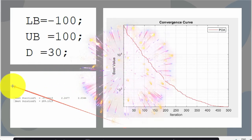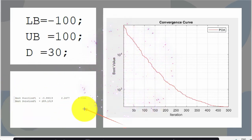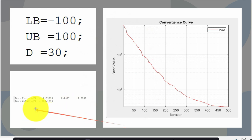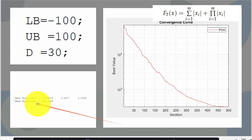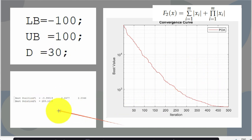Here you can see the output when we tested the Pelican Optimization Algorithm using test function f1. This is the best position, here you can see the best solution obtained, and here you can see the convergence curve obtained for this test function.